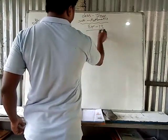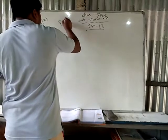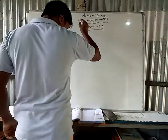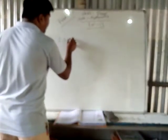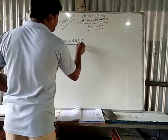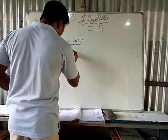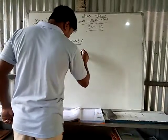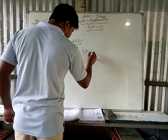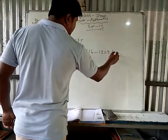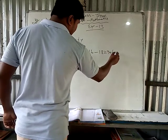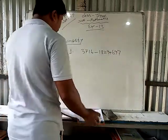Exercise 13, page number 79. What is simplify number one? Simplify number one shows: 3716 minus 1829 plus 697.